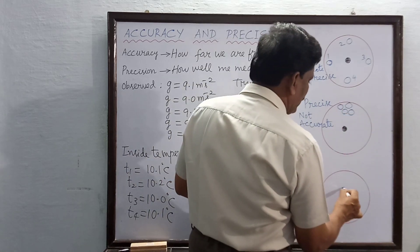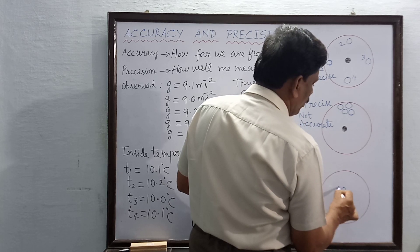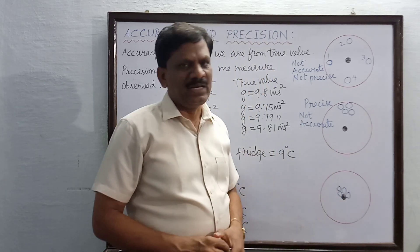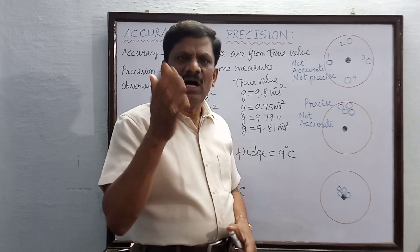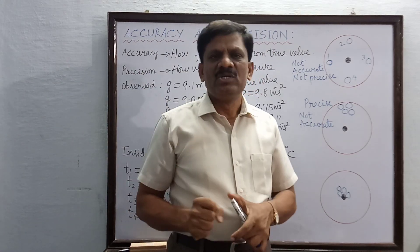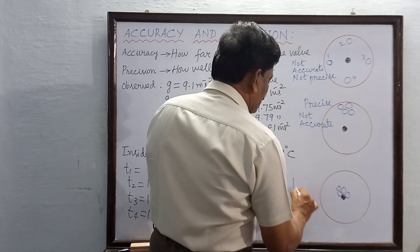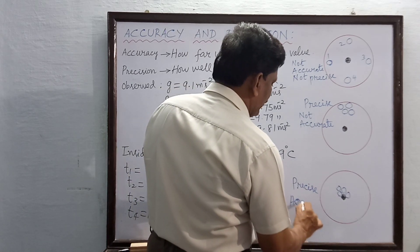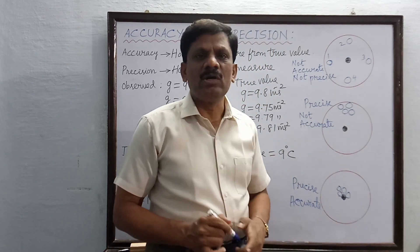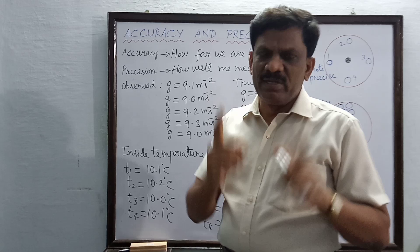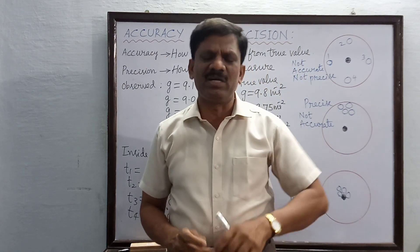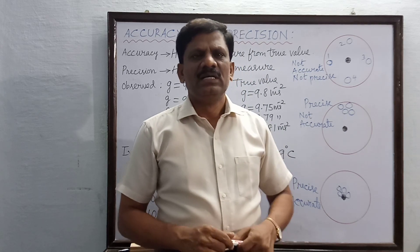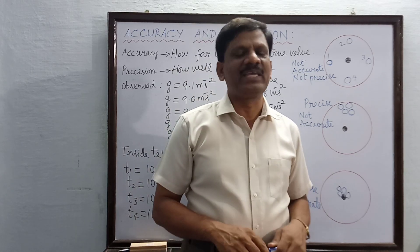In the third case, four bullets are shot and they are all very close to each other AND very near to the bull's eye — the center. So all four shots are both precise and accurate. To summarize: accuracy means how far we are from the true value of the measured quantity, and precision means how well we measure. I hope you now understand the difference between accuracy and precision.